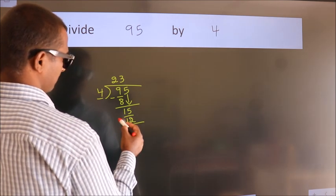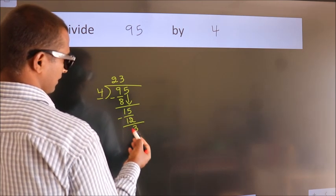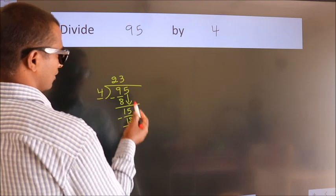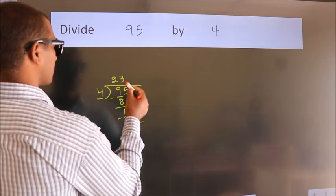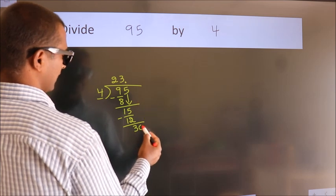Now, we subtract. We get 3. After this, no more numbers to bring it down. So, what we do is, we put dot take 0.